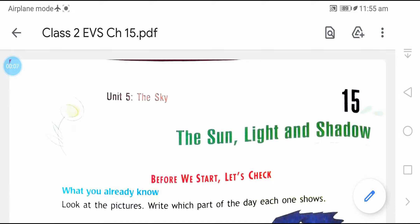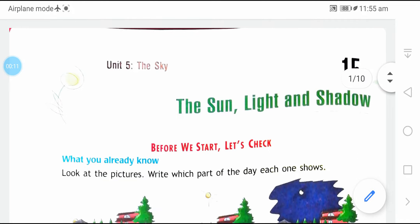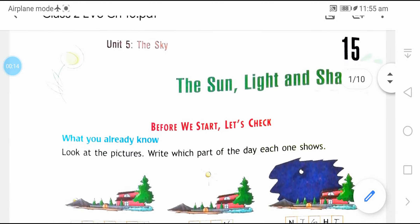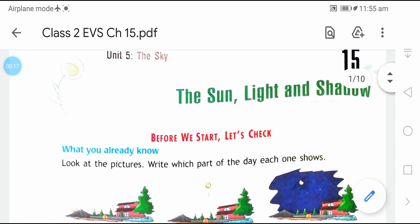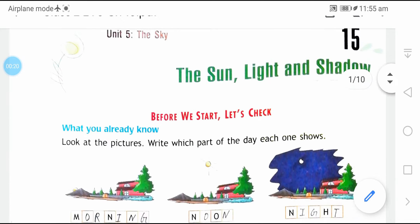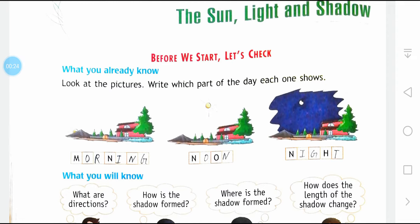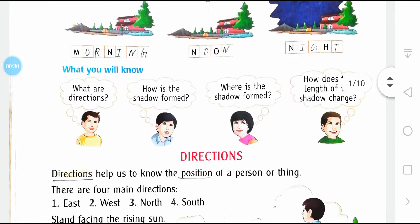Good morning everyone, I hope you all are fine and paying attention to your studies. Today in AVAS we will be studying Chapter 15, and the name of the chapter is 'Sunlight and Shadow'. Here we have images — we have to write the name of the images: the first is of morning, second is of noon, and third is of night.